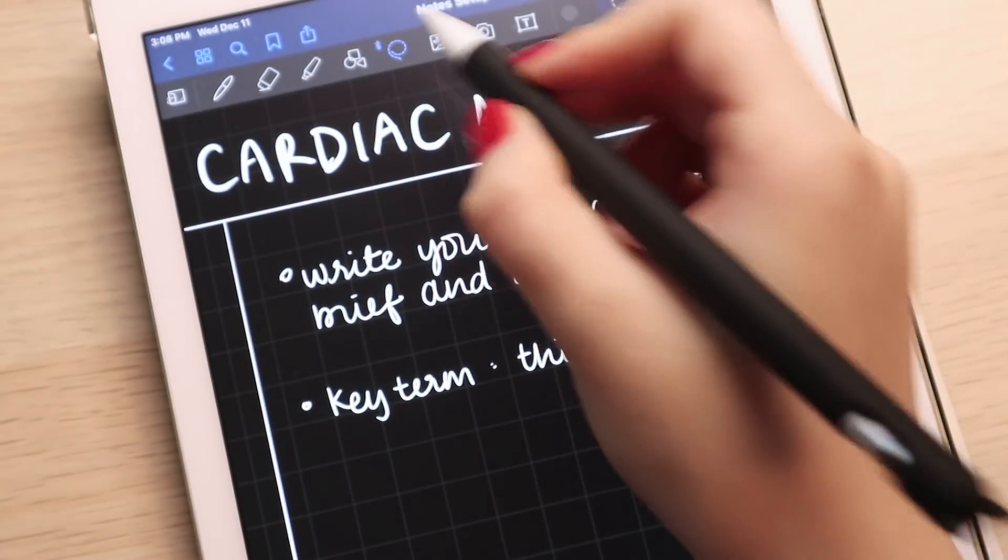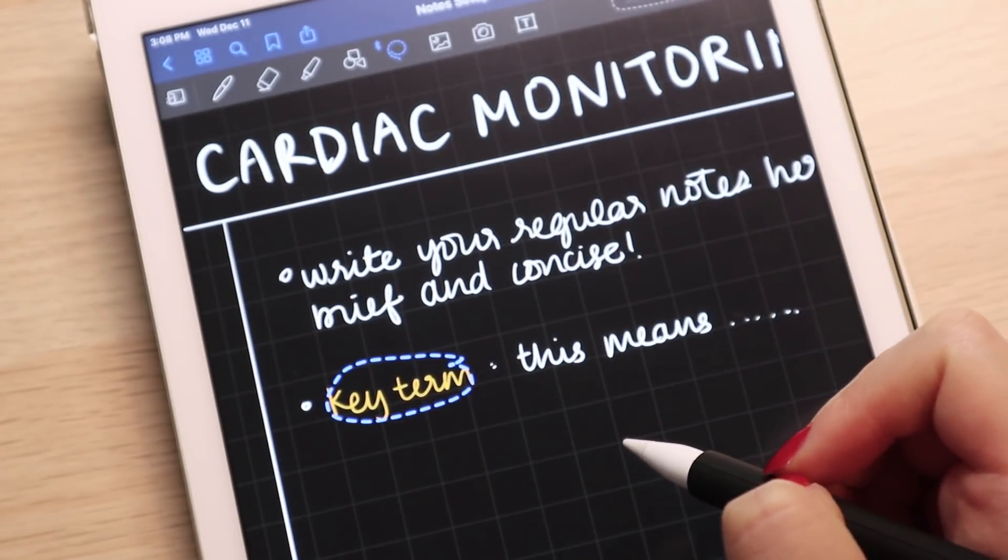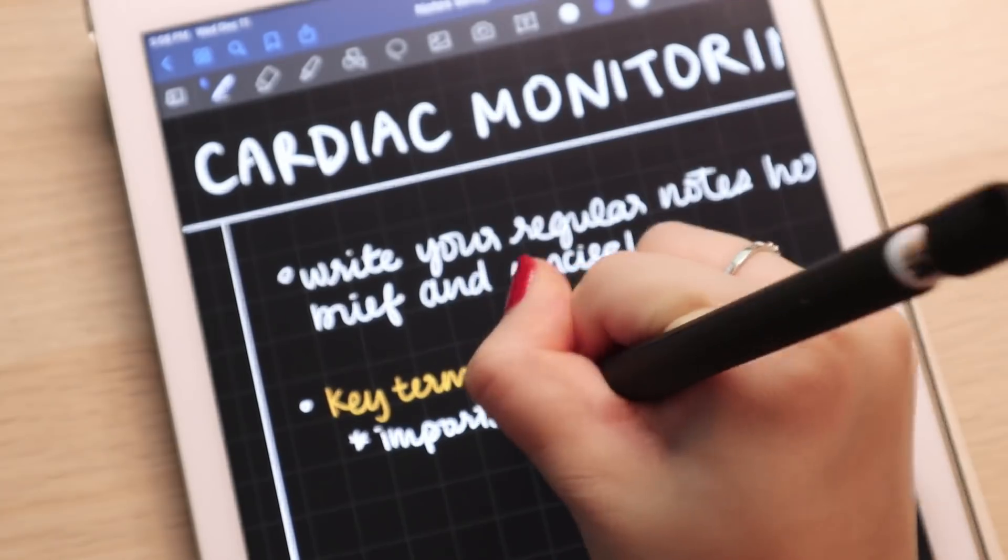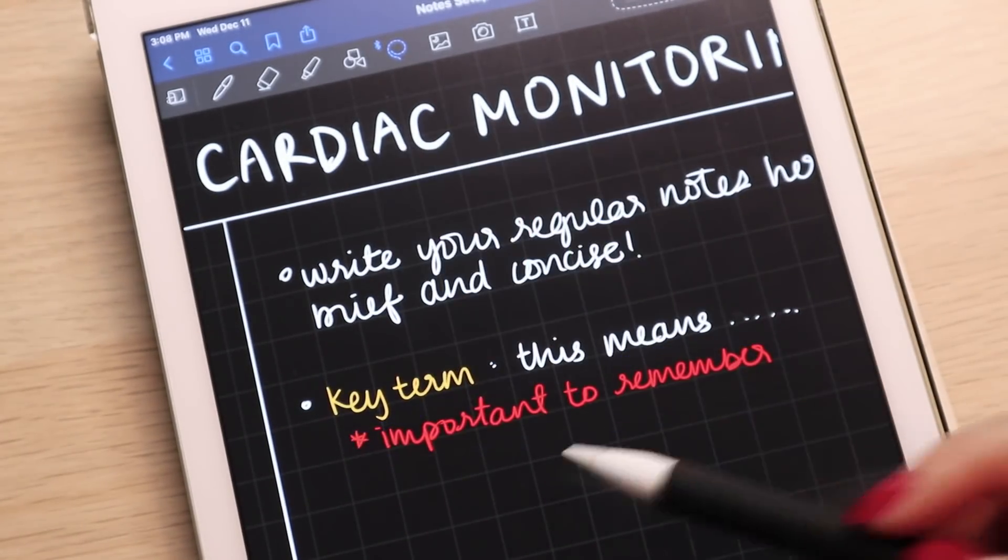You can obviously use some color coding techniques. For the dark paper, I just simply change the text color, but if you're using white paper, you can just simply highlight over the text. I do have a video on how to color code as well, which I will link right here.